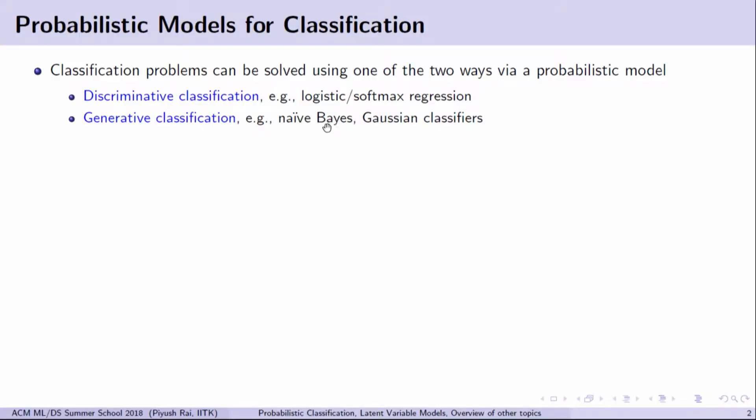Examples of generative classification include methods like naive Bayes classification. Some of you might have heard about naive Bayes or Gaussian classifiers, where you basically assume that each class is modeled by a Gaussian distribution. For every class you learn a Gaussian distribution, and given a test point, you decide the label based on under which class it has the largest probability. That's the basic idea in Gaussian classifiers and in generative classification in general.